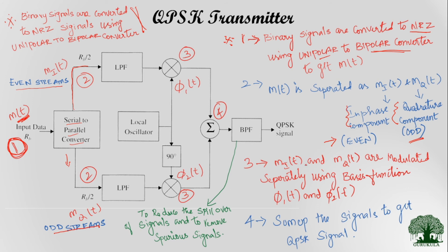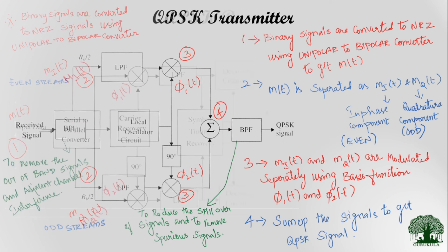In the third step, mI(t) and mQ(t) are modulated separately using basis functions φ₁(t) and φ₂(t) respectively. The in-phase component mI(t) is multiplied by φ₁(t), and the quadrature component mQ(t) is multiplied by φ₂(t). These basis functions have a sufficient phase difference between them. In the fourth step, all these modulated signals are summed together to produce the final QPSK signal.